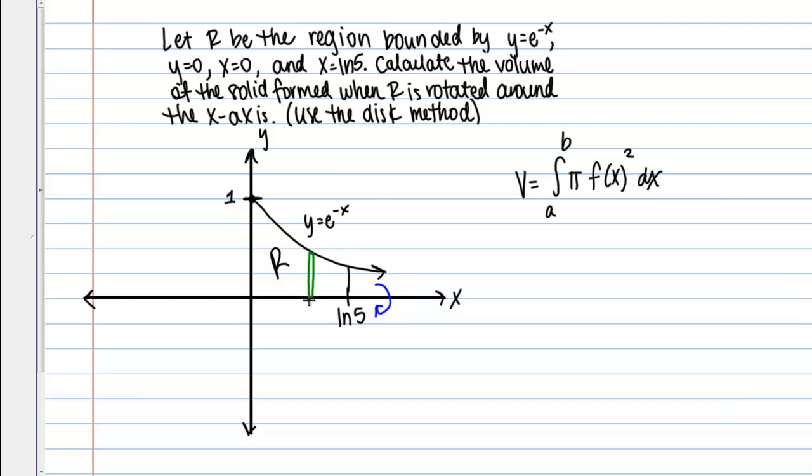So basically what we're doing then when we integrate pi F of X squared, you can think about that as sort of pi R squared, the area of a circle. And we're going to add up all those little discs along our interval. And that's going to give us the volume of our solid.